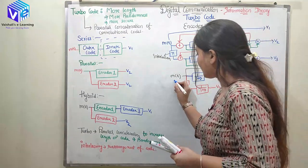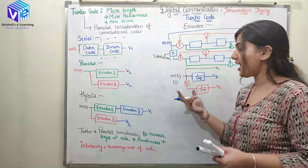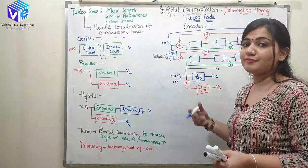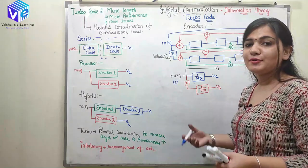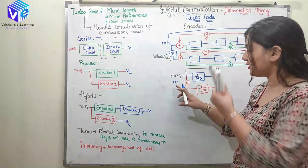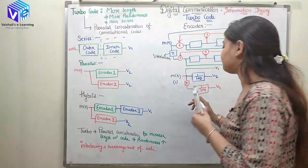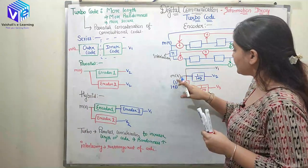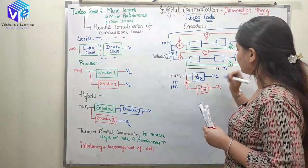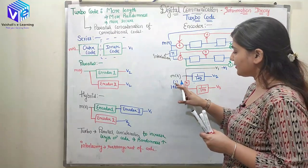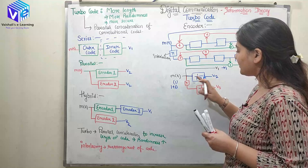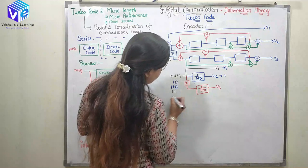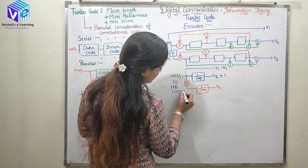Whenever I have 1 as the message, I have to increase the length of this code — I have to encode this 1, increase the length to increase the randomness and make my code more secure. When 1 is sent, I can encode it as 1 plus D. When 1 is sent, V1 here I will get 1 only. When 1 plus D is sent here, here also I will get 1. But I am representing it as 1, 1 and a long stream of zeros.